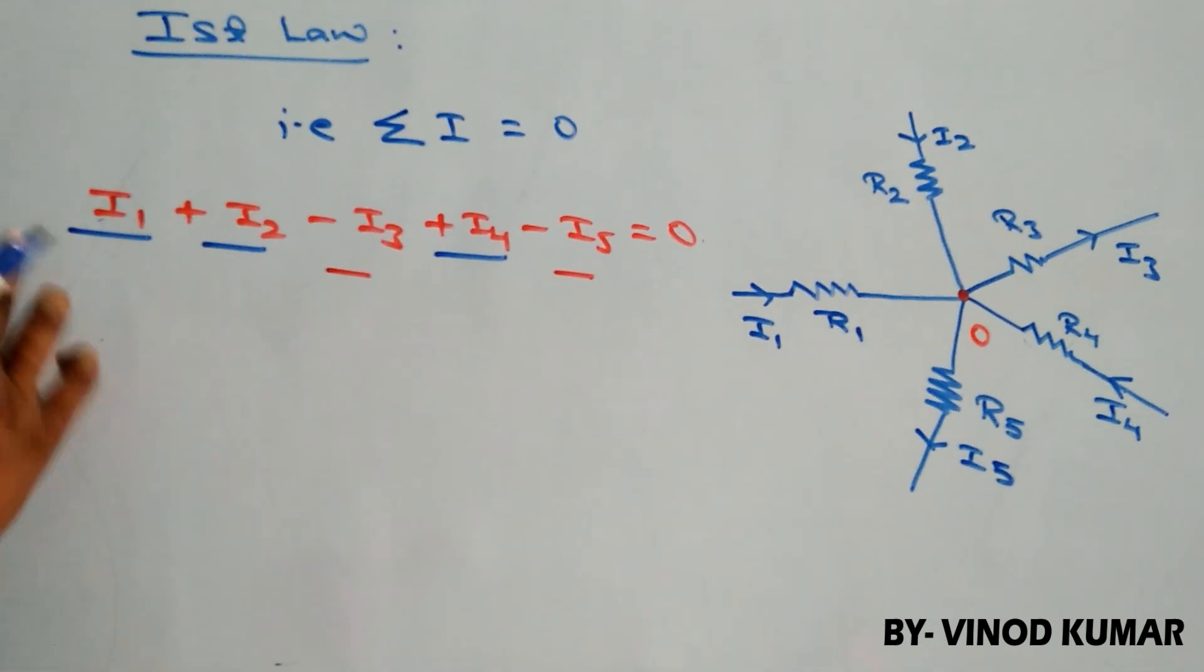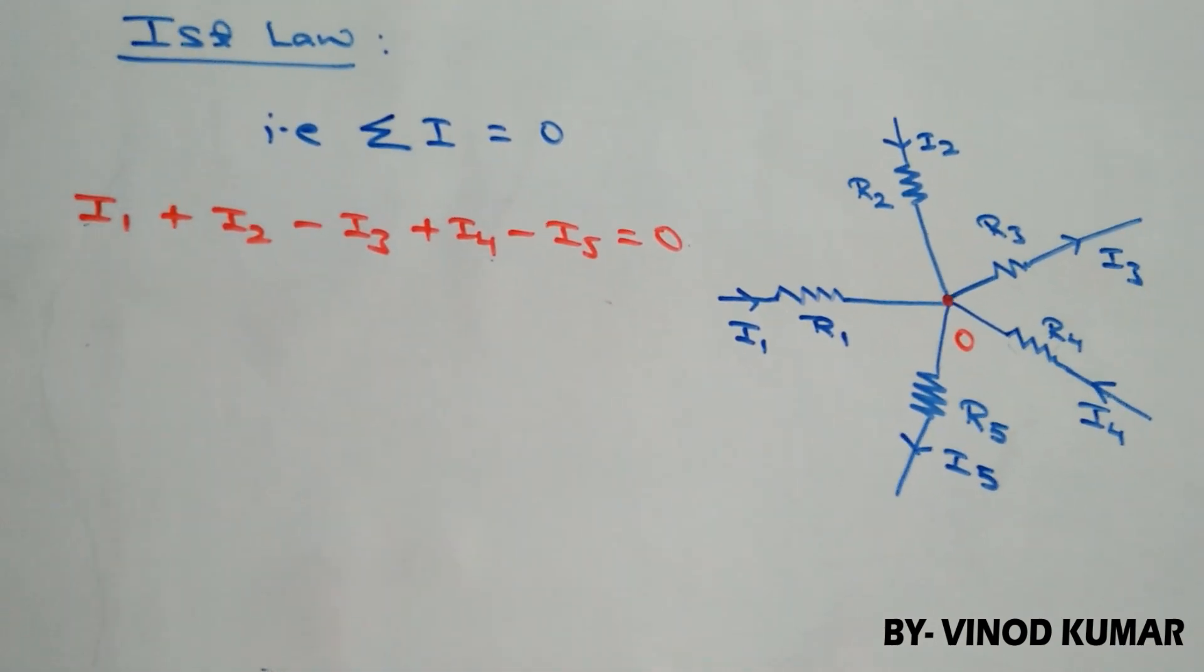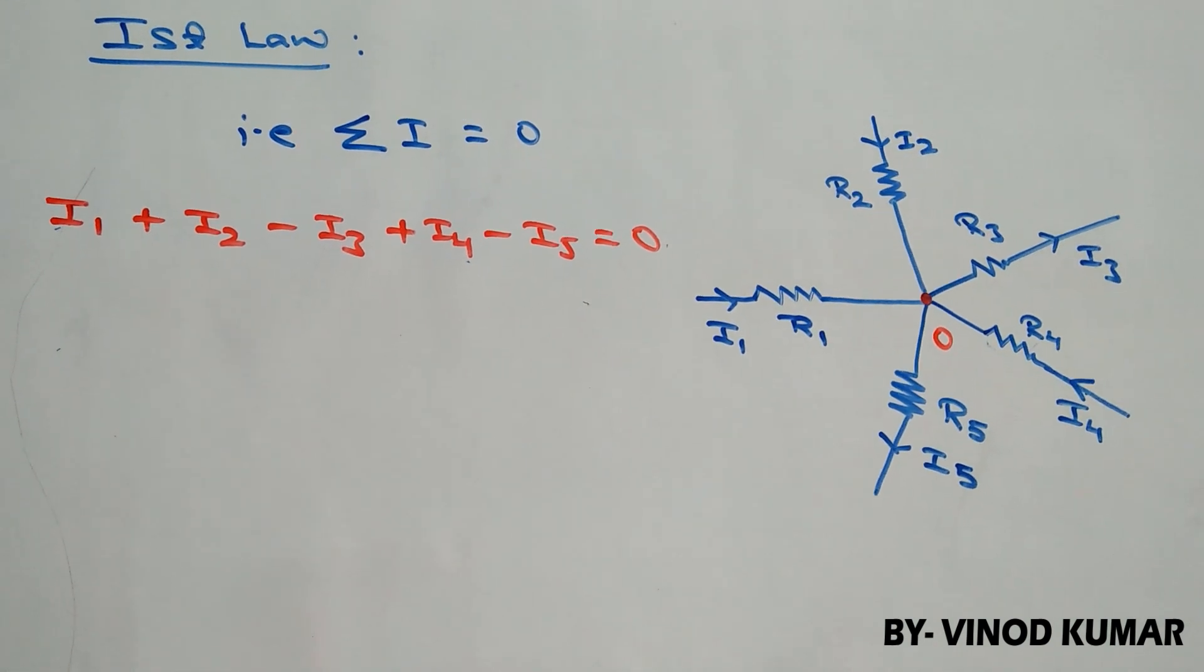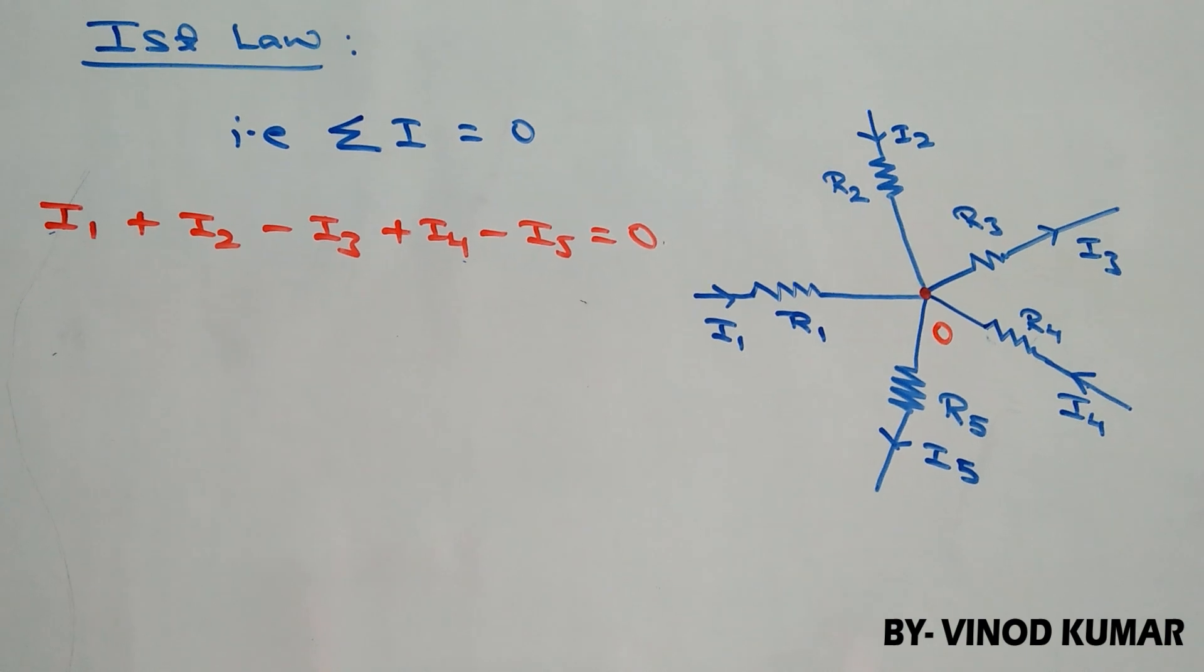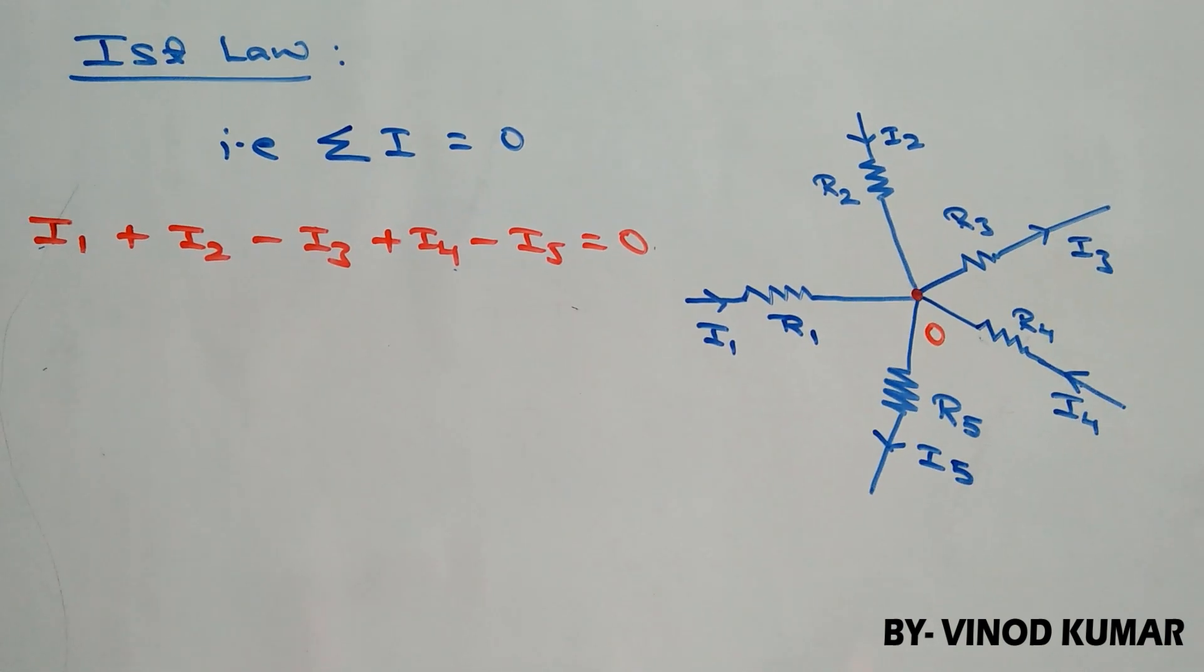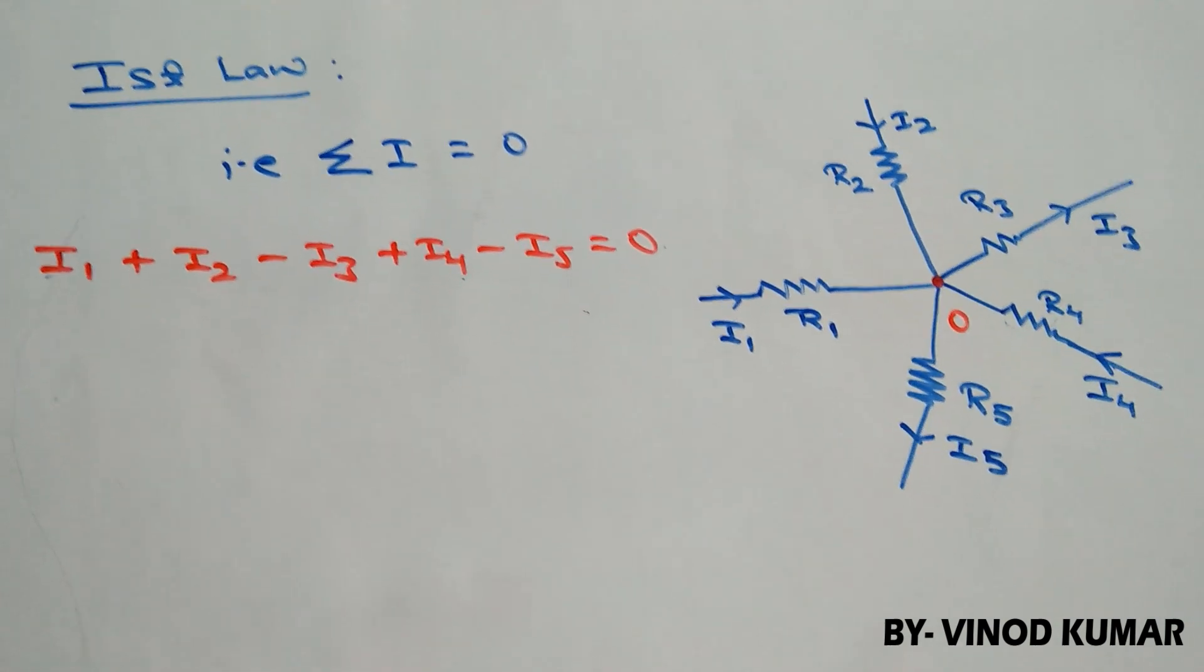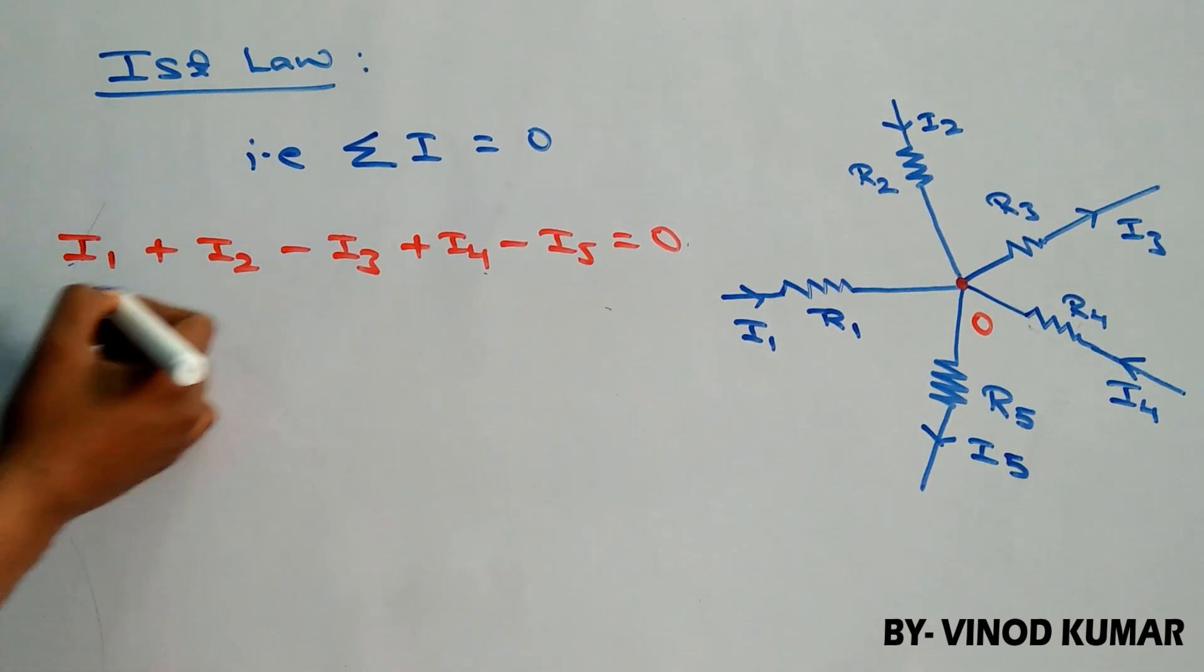So, this is our first law and this law is based on law of conservation of charge. Why? Why is it based on law of conservation of charge? We can prove this by a very simple method. What we can do? We can simply multiply this equation by time.